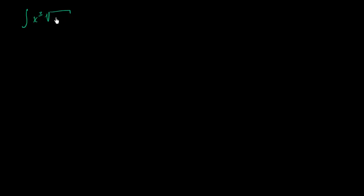Let's attempt to take the antiderivative, or the indefinite integral, of x to the third times the square root of 9 minus x squared dx. You might attempt to do something like u substitution, but you'll find that you're not getting very far.